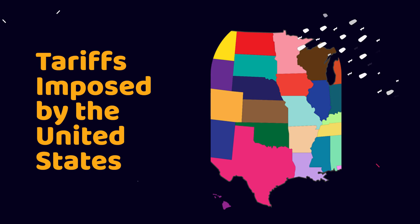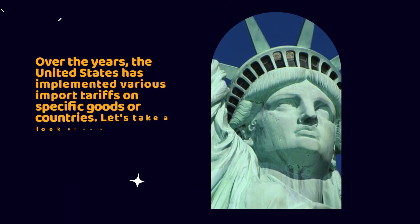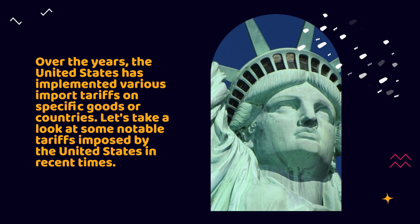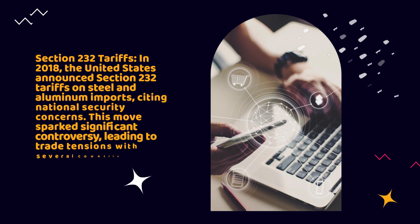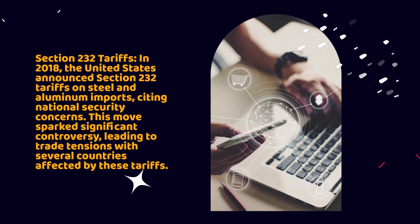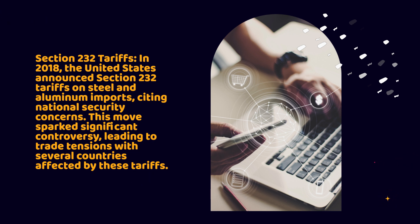Tariffs imposed by the United States. Over the years, the United States has implemented various import tariffs on specific goods or countries. In 2018, the United States announced Section 232 tariffs on steel and aluminum imports, citing national security concerns. This move sparked significant controversy, leading to trade tensions with several countries affected by these tariffs.